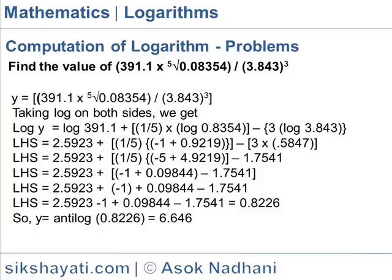So you get in the next step, left-hand side equals 2.5923 plus minus 1. One-fifth times minus 5 is minus 1, plus one-fifth of 4.9219 is 0.09844. So you get minus 1 as the characteristic part and 0.09844 as the mantissa part.